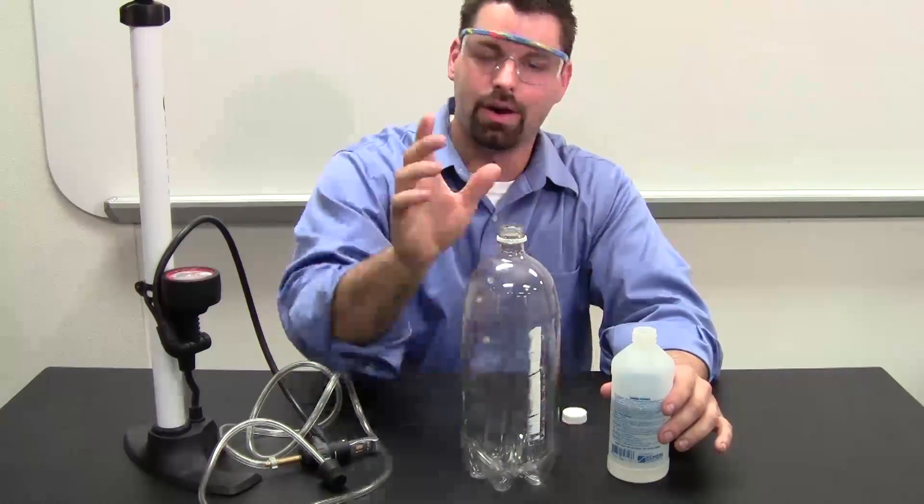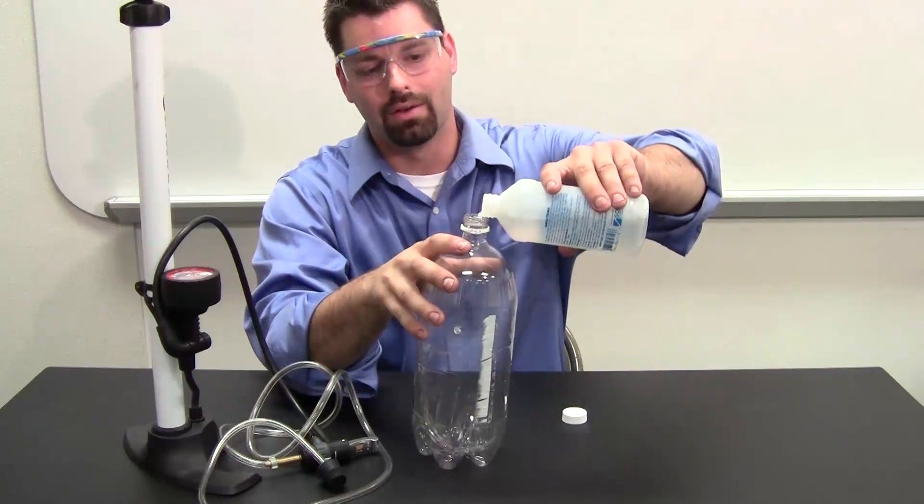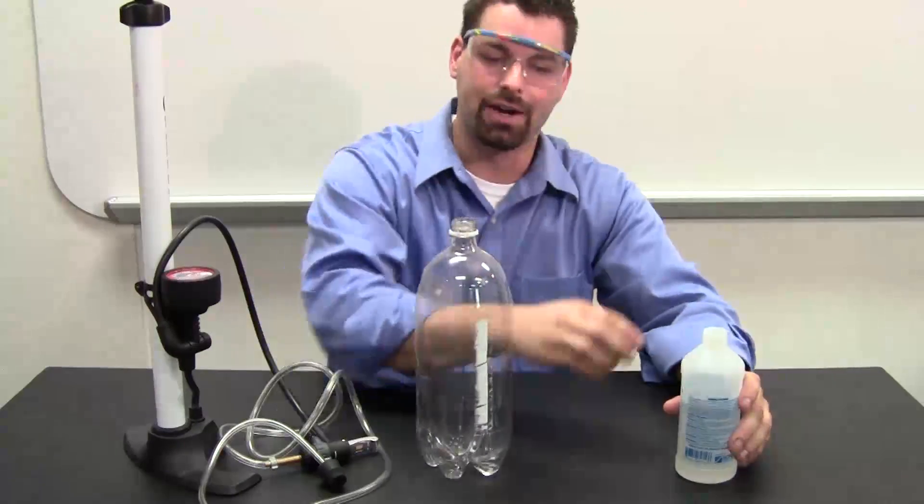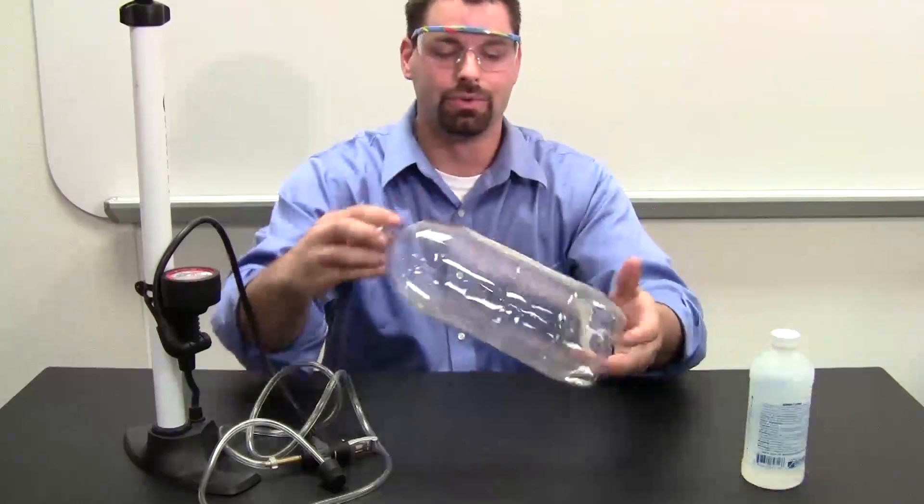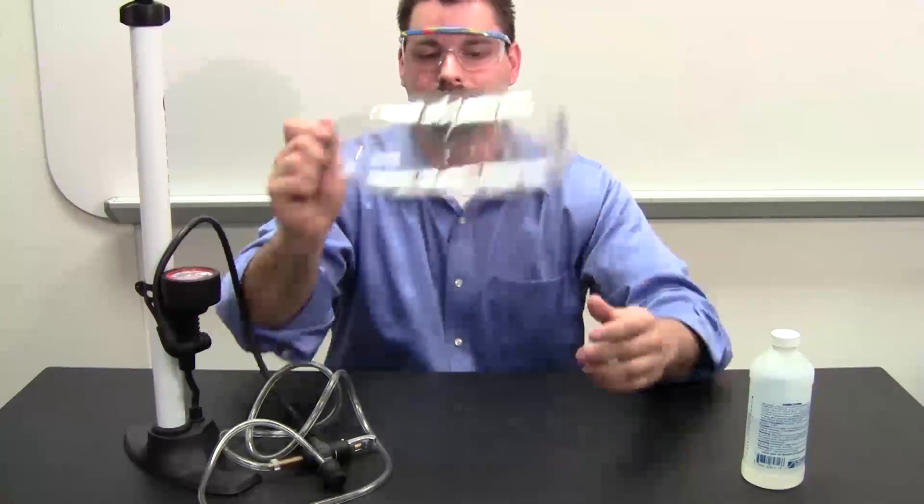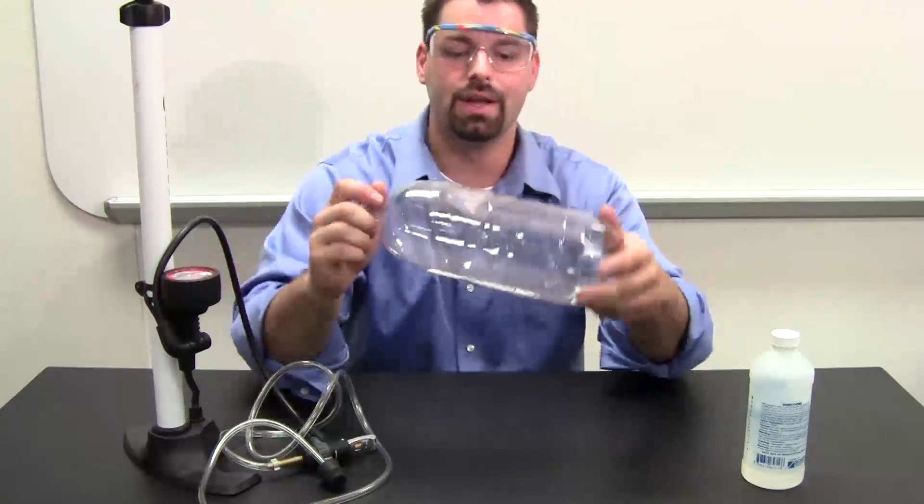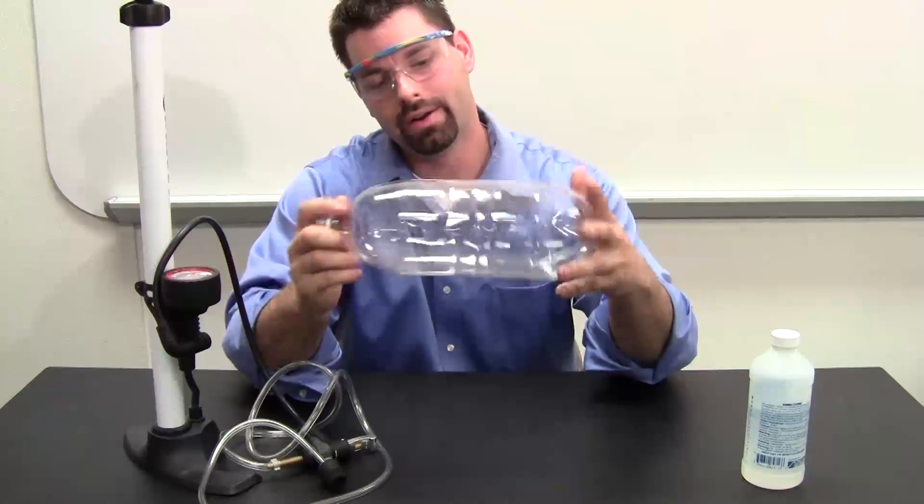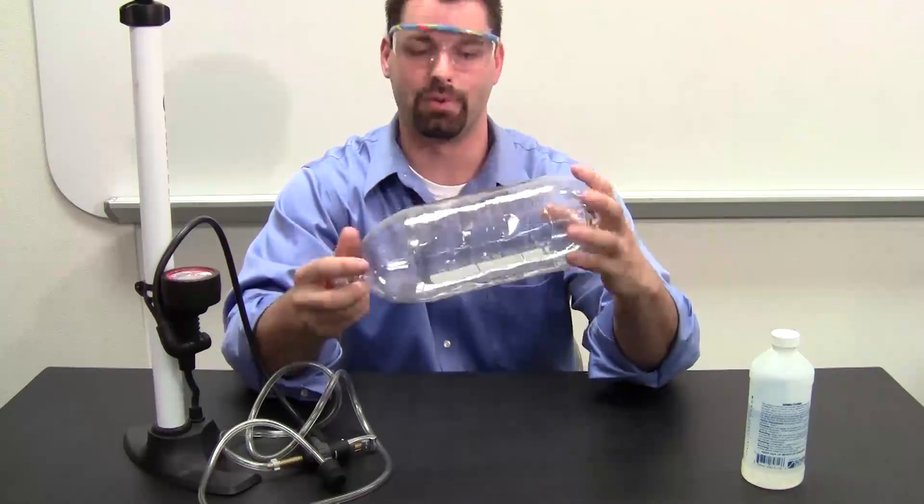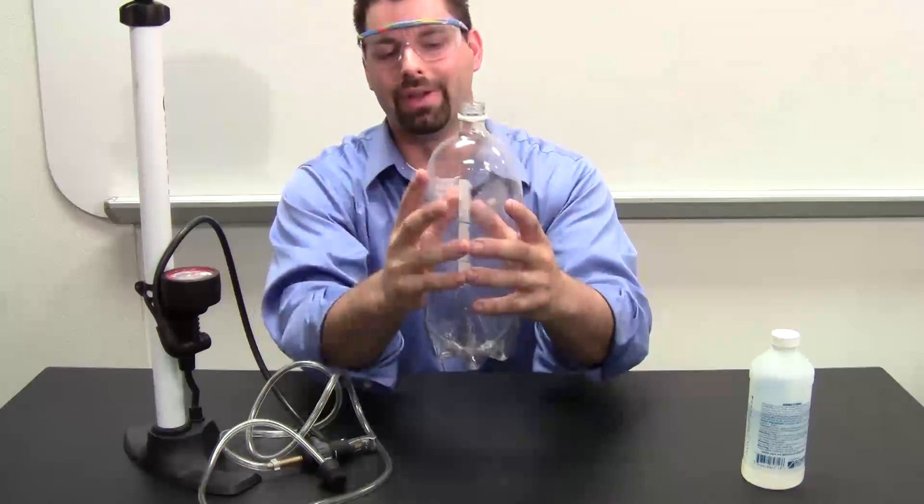So we're going to coat our water bottle with some rubbing alcohol. I like to say just a splash is enough. And what you really need to do is swirl that around. I'm causing the water in that rubbing alcohol to evaporate, and all that water vapor is going into my bottle.